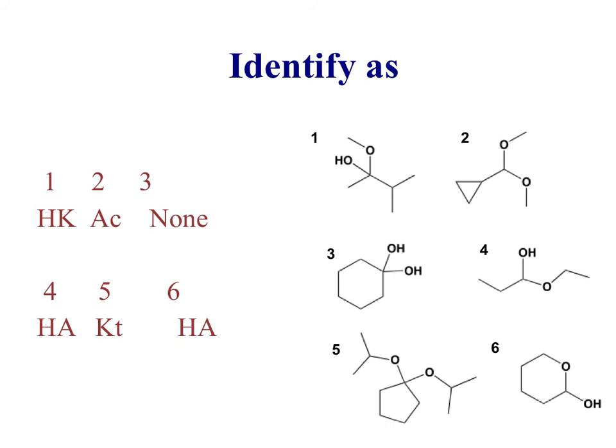Now for number three, it's none of those. We've actually seen this functional group before. What is that? It's a hydrate. So it has a key carbon because it's got two O's on it, but both of the O's are OH's. So it can't be like a hemi-hemi, it's just called a hydrate. That's why that one's not really relevant to this part.